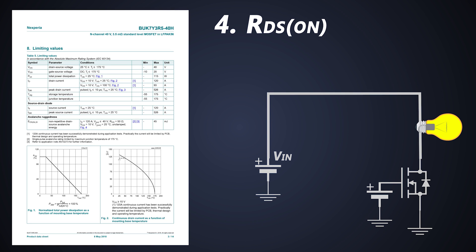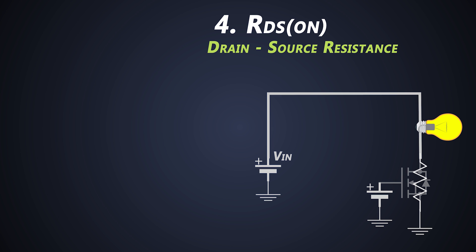Next parameter is RDS(ON). It is the resistance between drain and source. This parameter plays a very important role in the MOSFET selection. It is the key parameter in calculating conduction losses and eventually, rise in junction temperature of the MOSFET.